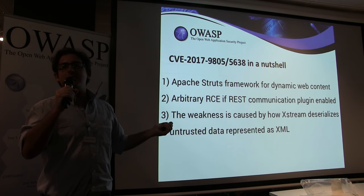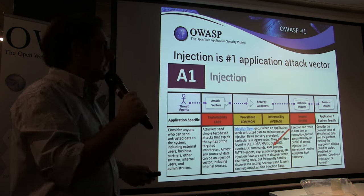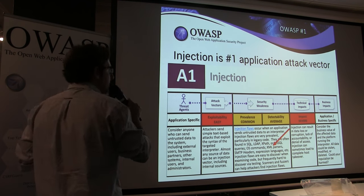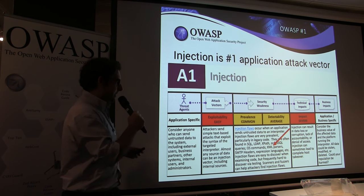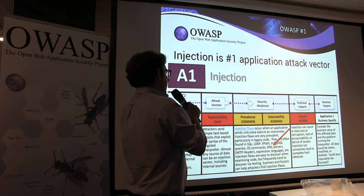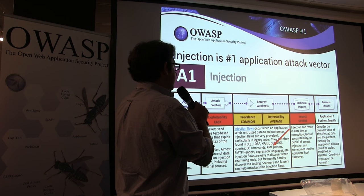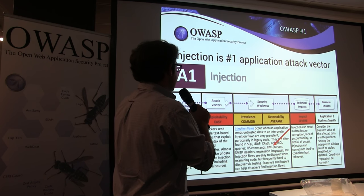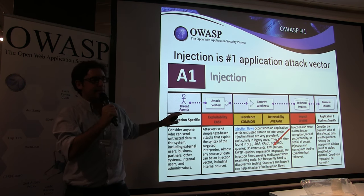Everyone's familiar with the OWASP Top 10. The number one attack vector is still injection, often found in LDAP, XPath, OS, and XML classes. This is a classic injection attack.